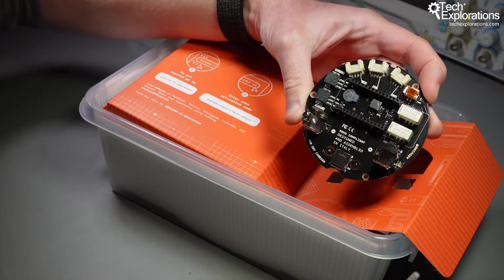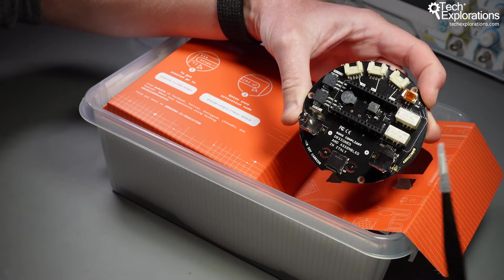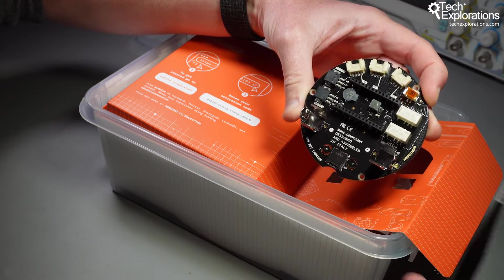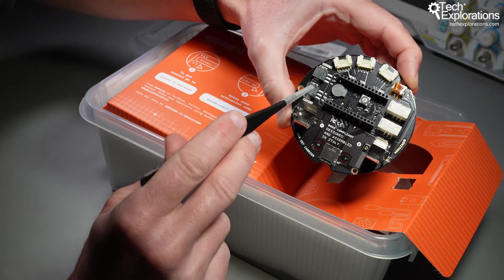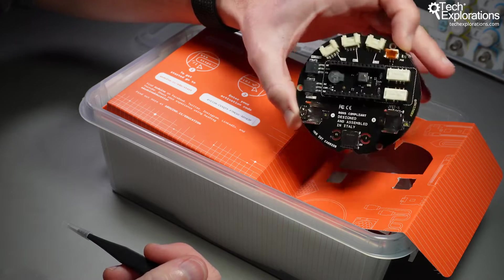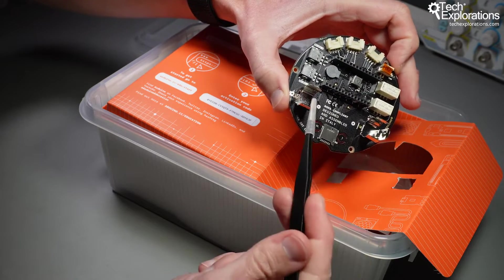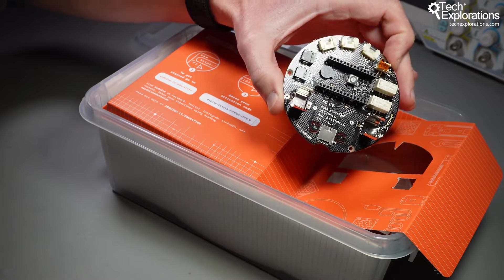That board comes as part of the kit as well. You also have two relays - this board has two relay connectors here on this side so it can connect external large loads. There's a battery connector.